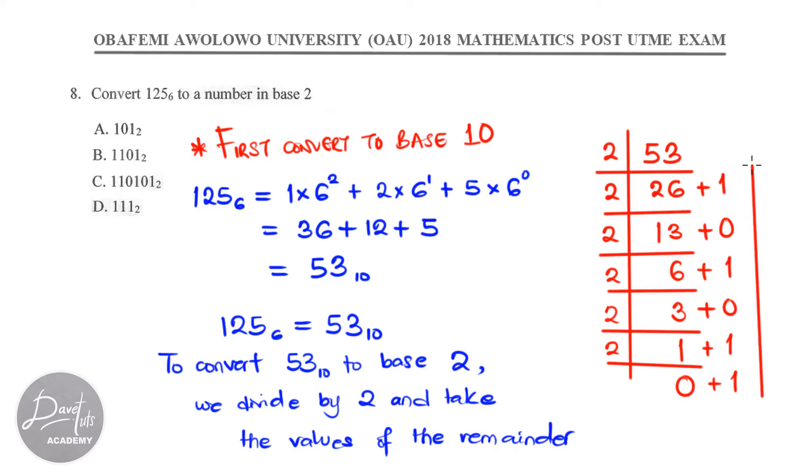So, our value of 53 in base 10 converted to base 2 will be this value taken from the base, so we have 110101 in base 2. And this is option C which is the correct answer for us to pick.